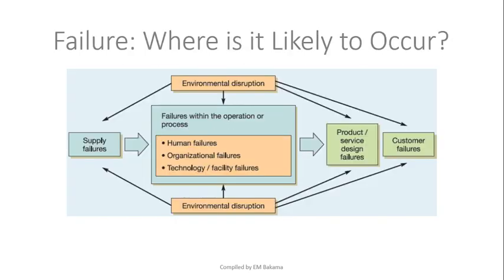Every time there is a problem — like a building that is failing, not working properly, or has been damaged — there has been a failure somewhere. Every time a road is built and after a few months is not performing the way it looked before, there's been a failure. Why is that failure more likely to occur? This leads me to talk about the seven types of failure: supply failure, human failure, organizational failure, technology failure, environmental disruption failure, product and service design failure, and customer failure.